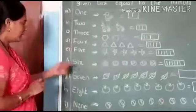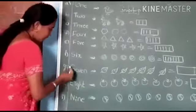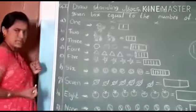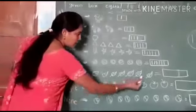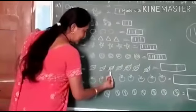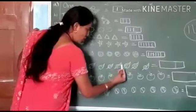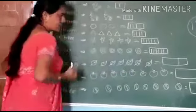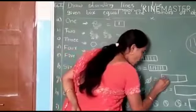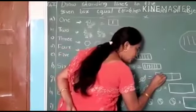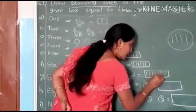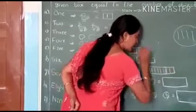Then we go to the next one, G — S-E-V-E-N, 7. How many leaves are there? One, two, three, four, five, six, seven. So we will draw here one, two, three, four, five, six, seven standing lines.